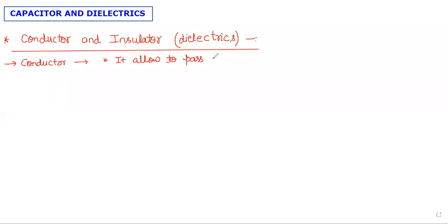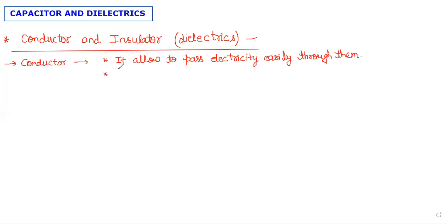Conductors pass electricity easily through them. The main reason behind this is that a conductor has a large number of free electrons, which allows electricity to pass easily.